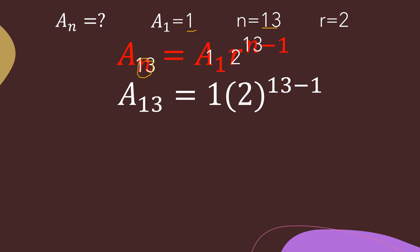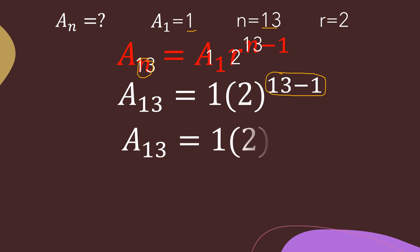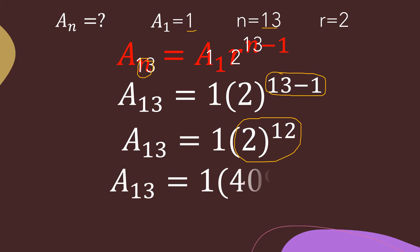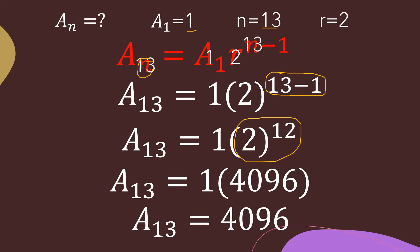Simplifying the exponent first: 13 minus 1 equals 12, so we have a sub 13 equals 1 times 2 raised to 12. Then simplifying the exponential part, 2 raised to 12 means multiplying 2 by itself 12 times, which equals 4096. Therefore, a sub 13 equals 1 times 4096, giving us a 13th term of 4096.